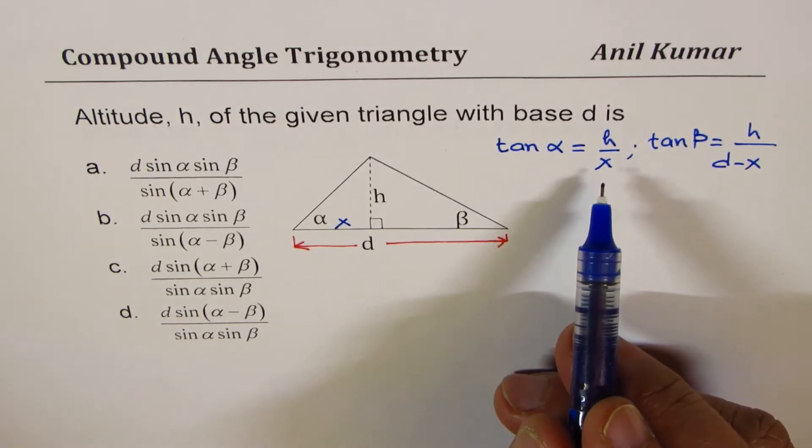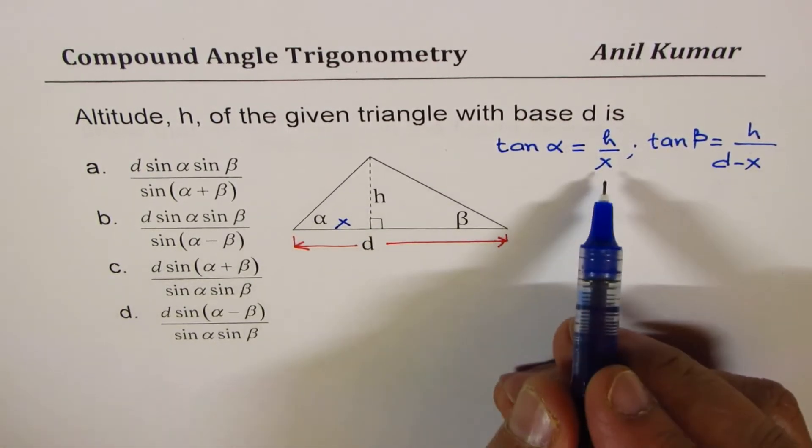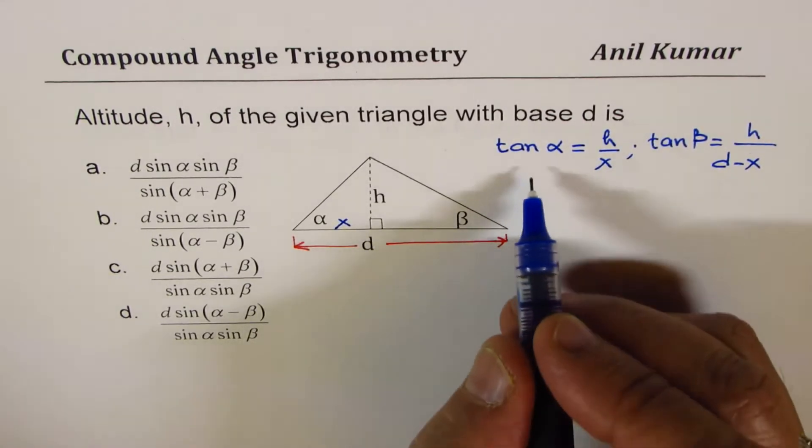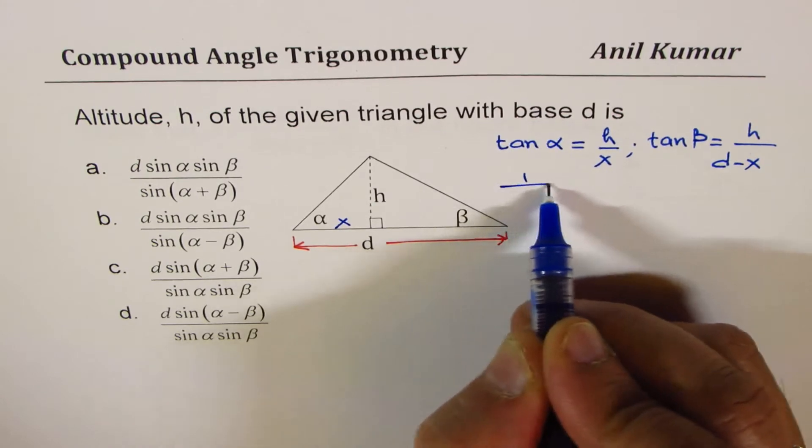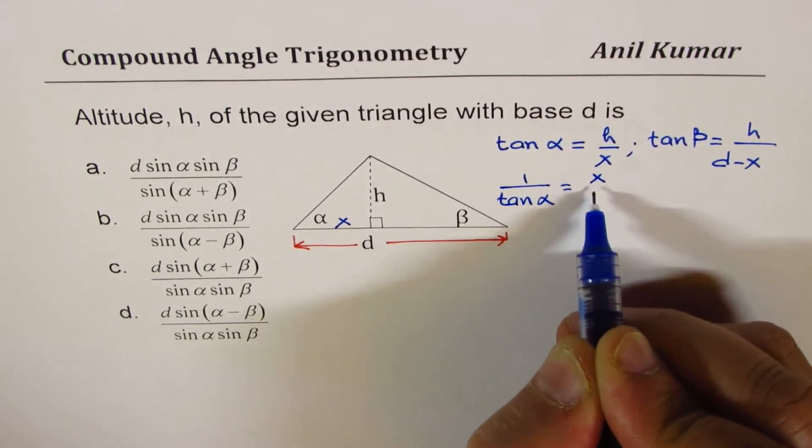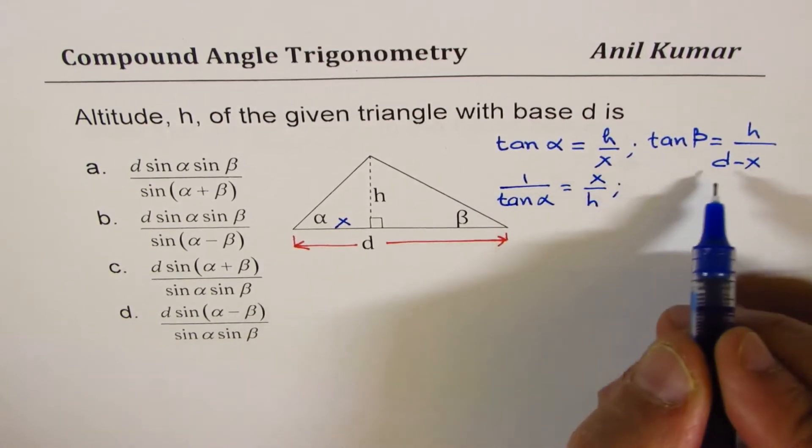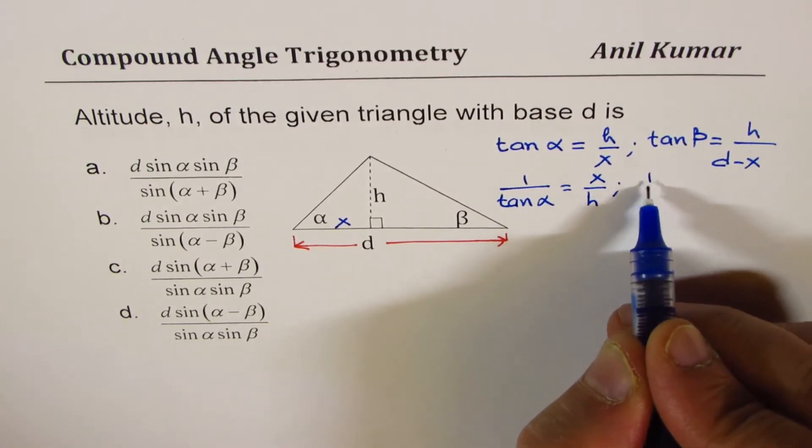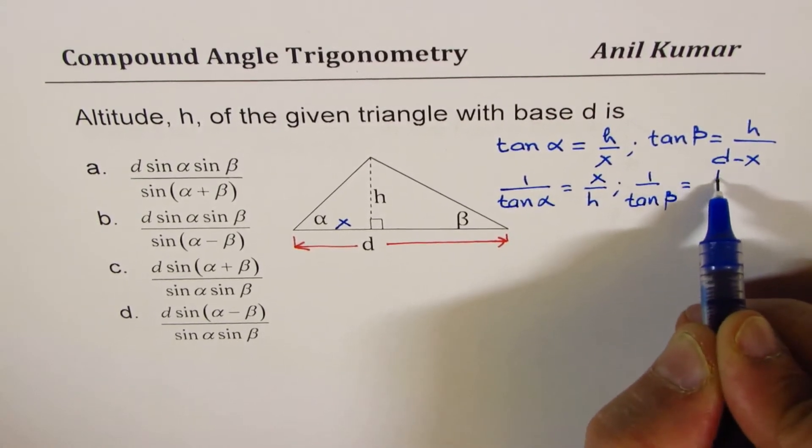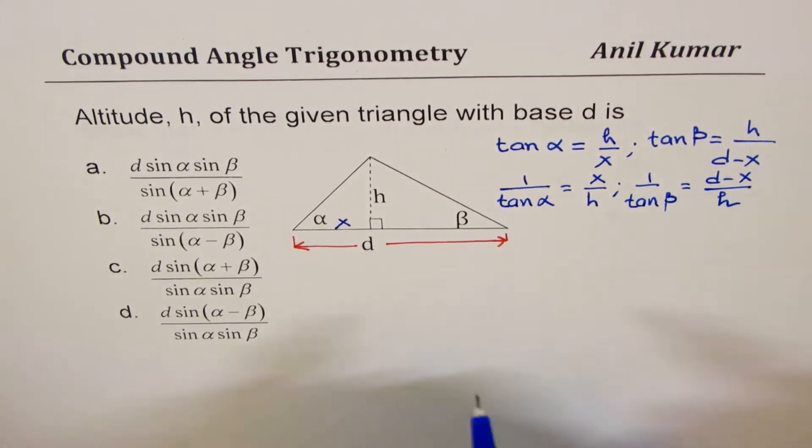We could actually flip and then write 1 over tan α. So you can write 1 over tan α as x over h, and here I can write 1 over tan β as d minus x over h, is it okay?